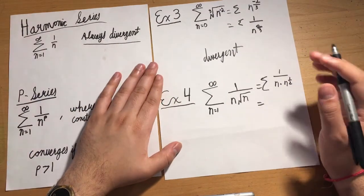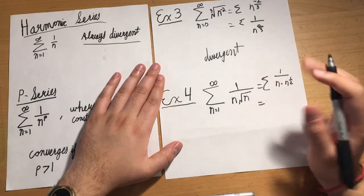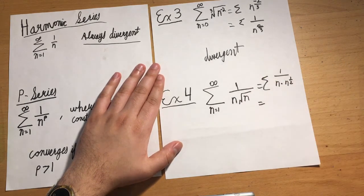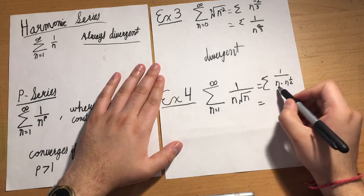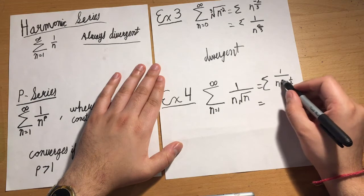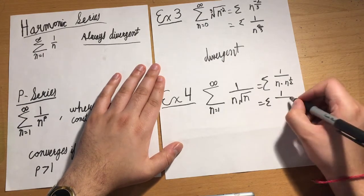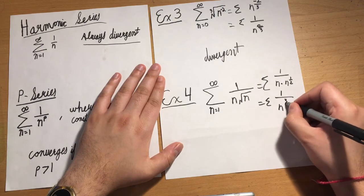This is one of the reasons you might have heard it's super important to have your algebra solid before going into calculus. I multiply these and I'm going to end up adding the exponents together. So the series ends up becoming 1/n^(3/2).